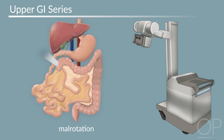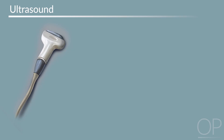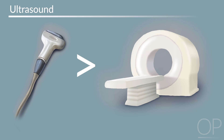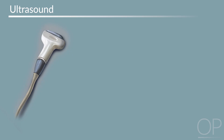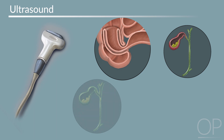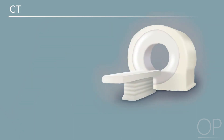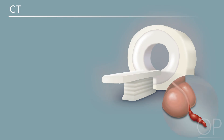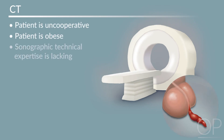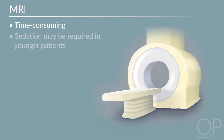Upper GI series is the imaging study of choice for malrotation. The utility of ultrasound in identifying abdominal pathology is increasingly recognized. Preferential use of sonography over CT in suspected appendicitis is associated with lower rates of negative appendectomy. Ultrasound is the preferred imaging study for diagnosing intussusception, cholecystitis, gallstones, and ovarian torsion. CT or MRI is often performed for the evaluation of appendicitis, particularly in uncooperative or obese patients when sonographic technical expertise is lacking or when ultrasound is equivocal. CT is also the preferred imaging modality for complications of pancreatitis. MRI is time-consuming and sedation may be required in younger patients, which has limited its widespread adoption.